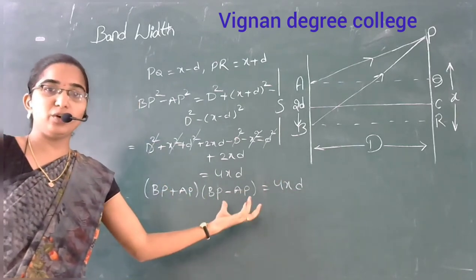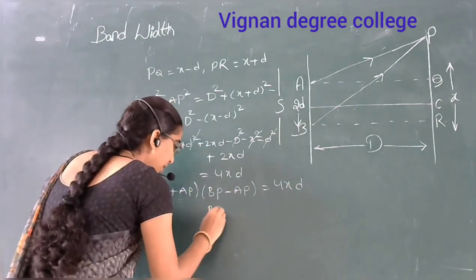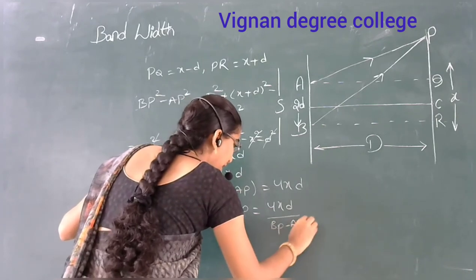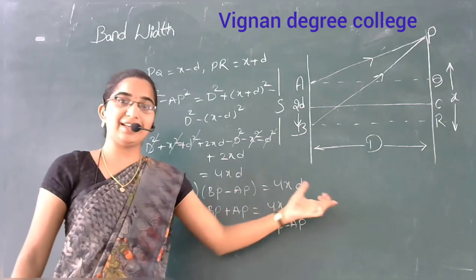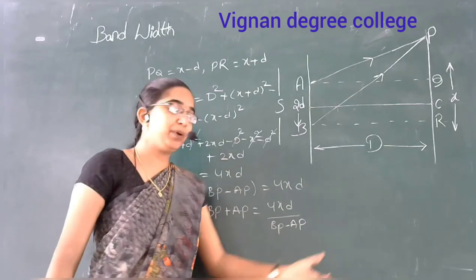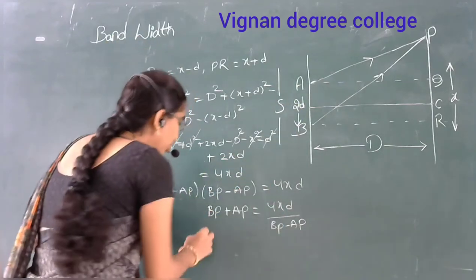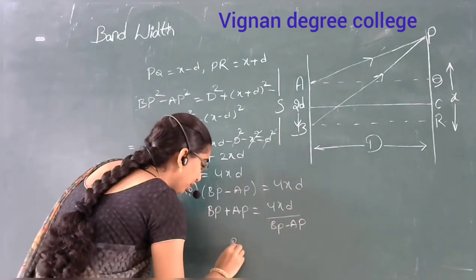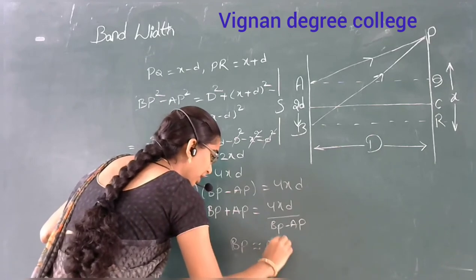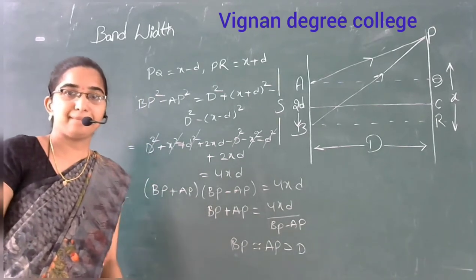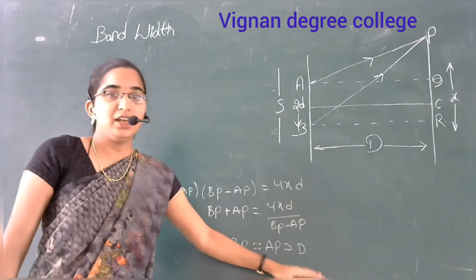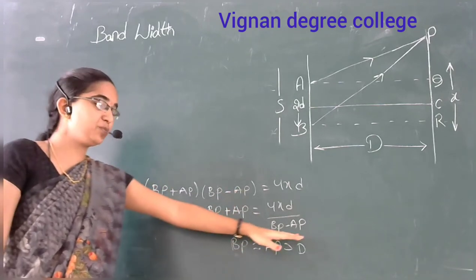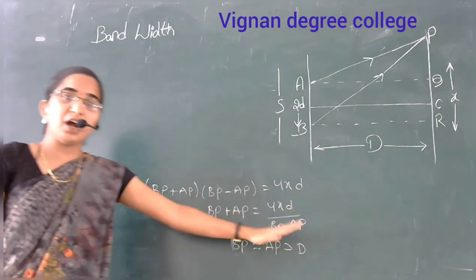Then factoring: (BP plus AP)(BP minus AP) equals 4xd. So BP plus AP equals 4xd divided by (BP minus AP). Since A and B pinholes are very close to d, BP equals AP equals D. Therefore BP minus AP equals 2xd divided by D. This is the path difference.